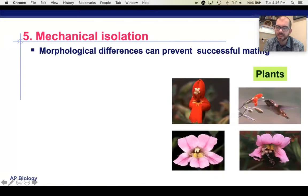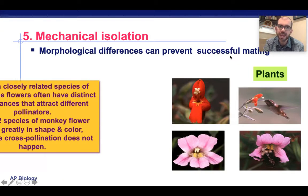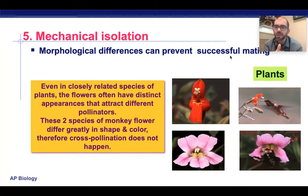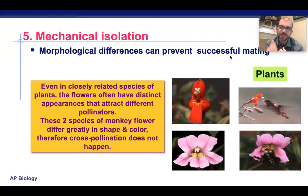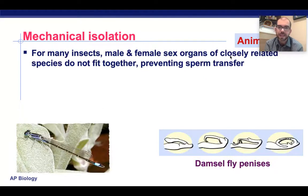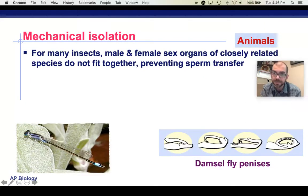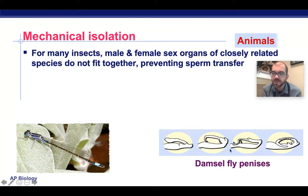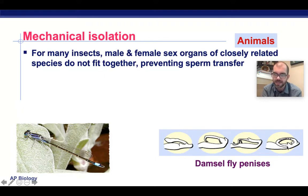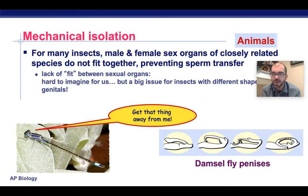Next up is mechanical isolation. Sometimes two organisms can reproduce, but because of the morphology or shape of their genitalia, they can't. This happens a lot with plants and pollinators — if a bird can't fit its beak into a flower, it won't drink the nectar, won't pick up pollen, and there is no mating. This also happens with insects. For example, damselflies have a huge diversity of penis sizes, and not all of them can fit into a corresponding vagina, which prevents mating from occurring.